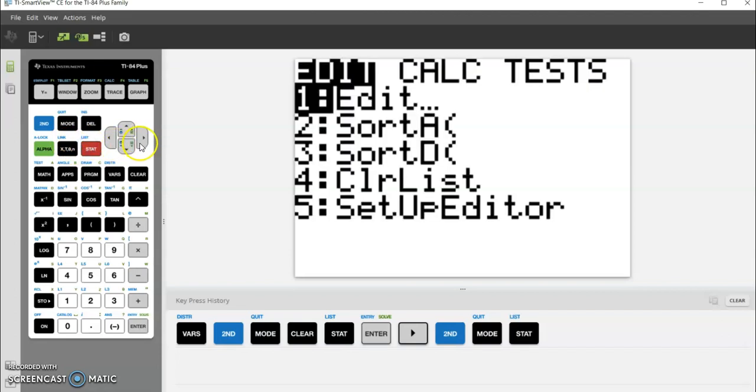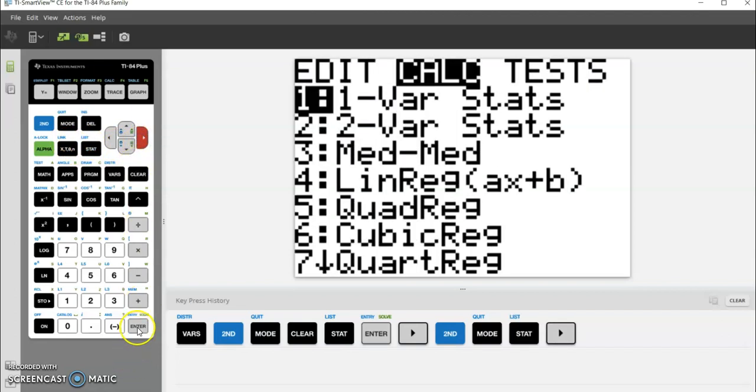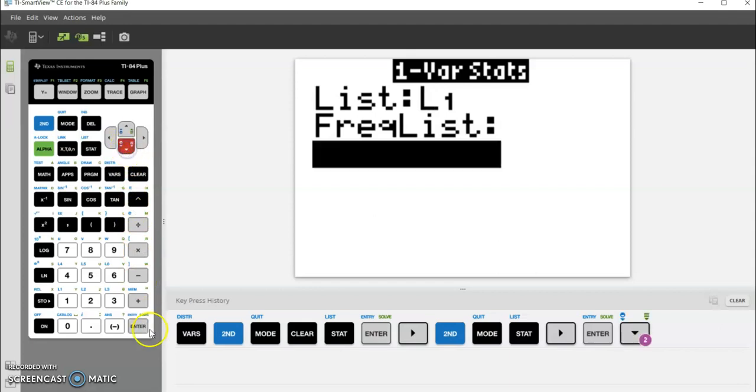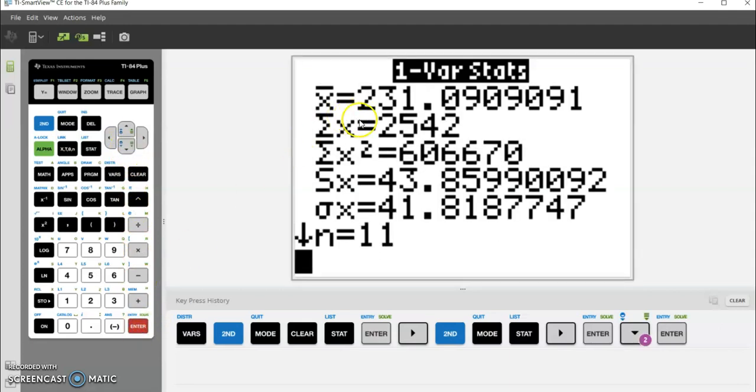Go to STAT, then over to CALC, and select 1-Var Stats for one-variable statistics. Go to calculate, and you can see here there's our x-bar. This sx value, 43.85, is our sample standard deviation.